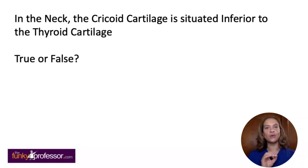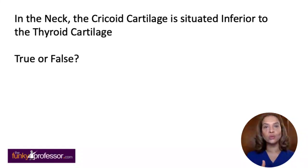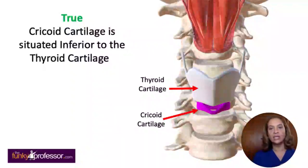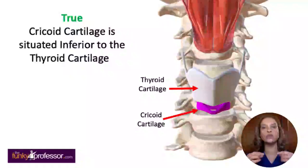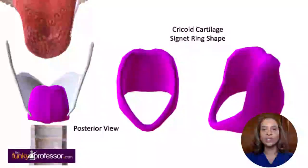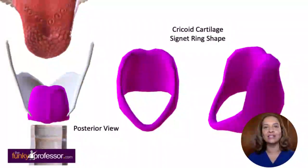In the neck, the cricoid cartilage is situated inferior to the thyroid cartilage — true or false? This is in fact true. The cricoid cartilage is inferior to the thyroid cartilage; it looks quite small and narrow from the front as the thyroid is large, but when viewed posteriorly it becomes much bigger, giving it the characteristic signet ring shape.